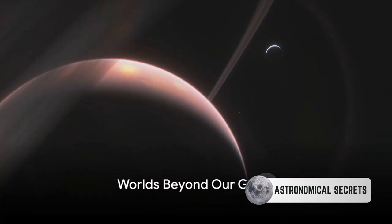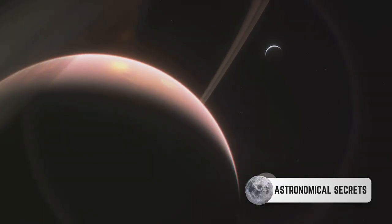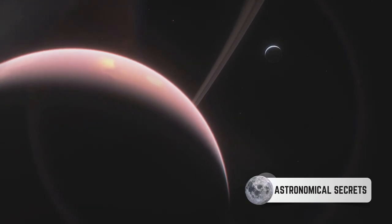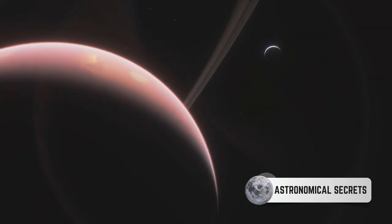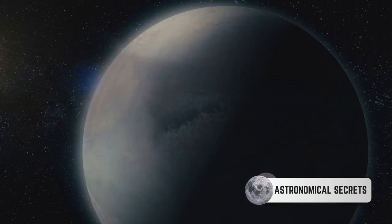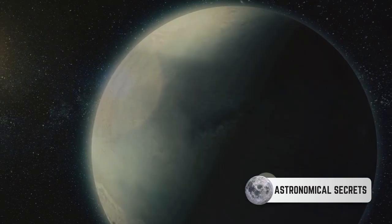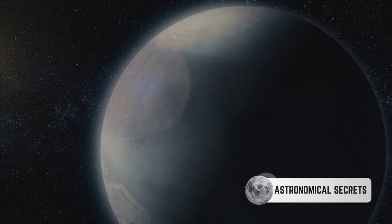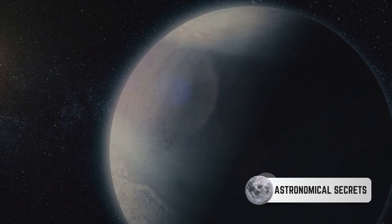Imagine a world where the sky is perpetually bathed in twilight, where it rains diamonds, or where a year lasts only a few Earth days. Sounds like science fiction, right? Well, let's venture into the realm of exoplanets, celestial bodies that orbit stars beyond our own solar system.